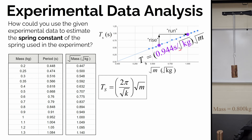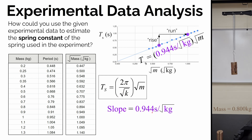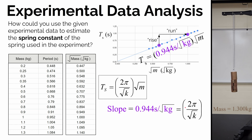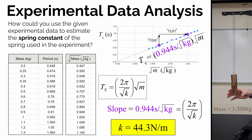Remember what our slope represents: when we rearranged the general equation, we saw that the slope equals 2π divided by the square root of the spring constant k. So we set 0.944 s/√kg equal to 2π / √k and solve the simple algebraic equation. A few steps of algebra later, the experimentally estimated value for the spring constant is about 44.3 newtons per meter.